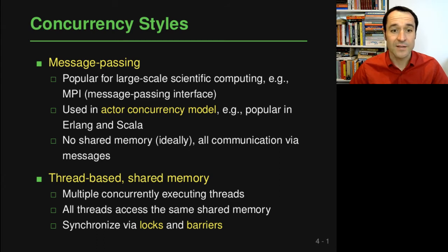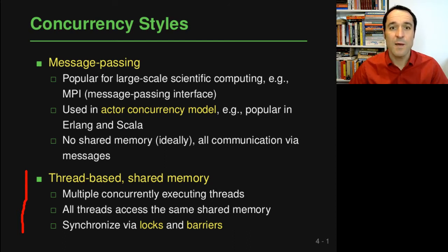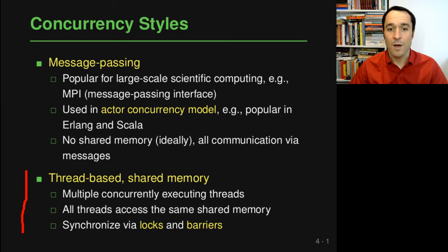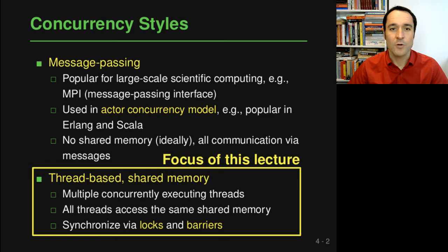The second concurrency style — and the one we focus on in this lecture — is thread-based shared memory concurrency. Here there are multiple concurrently executing threads, but the key difference is that all threads access the same shared memory. To ensure correctness when different threads access the same memory, you need to synchronize accesses through things like locks or barriers. The big challenge is making sure these locks and barriers are used in the right places to avoid concurrency bugs.